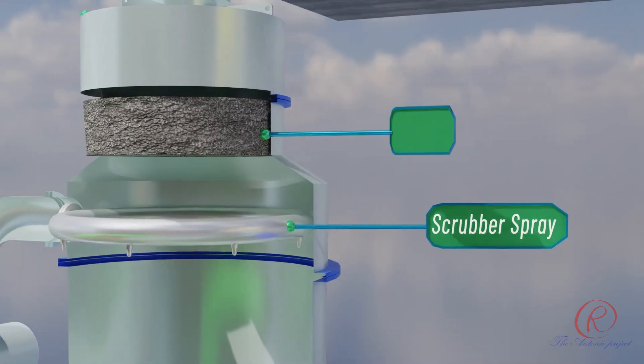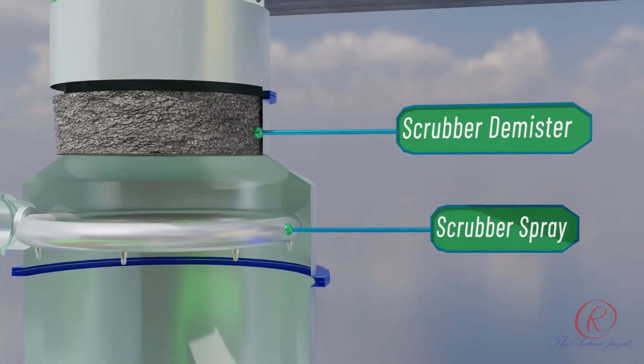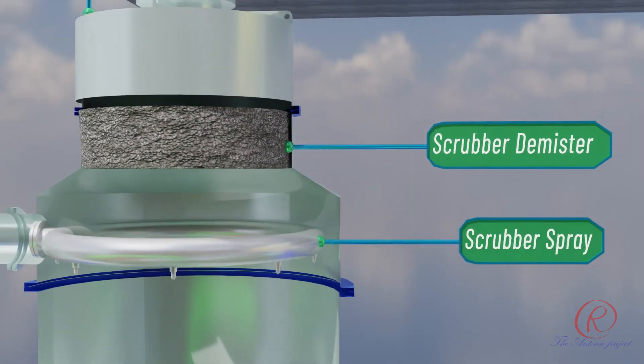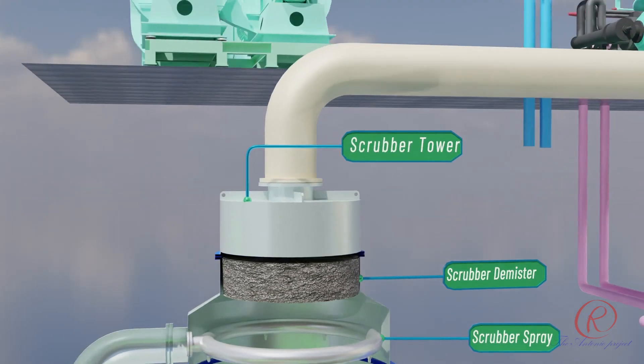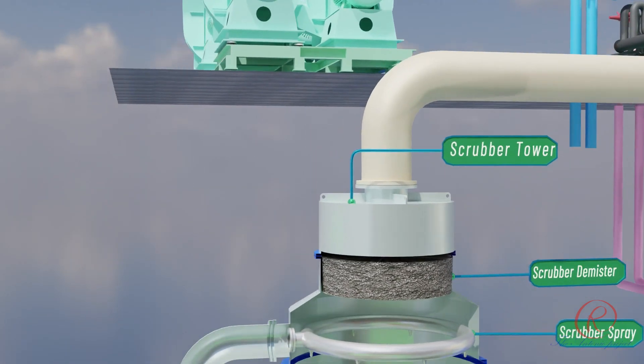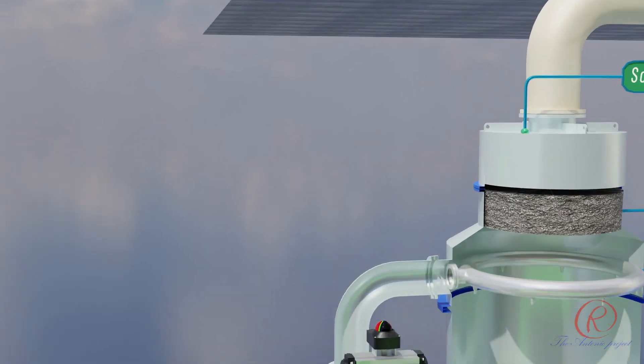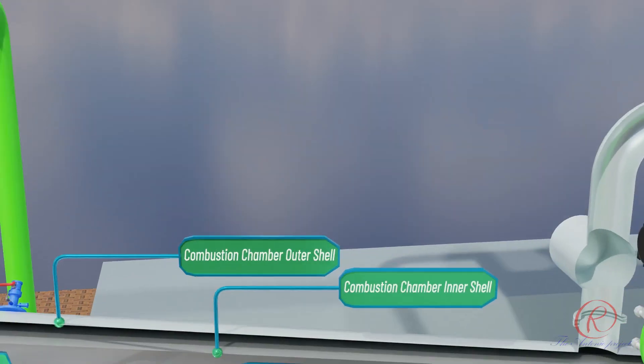Scrubber demister: to remove entrained liquid droplets or mist from the gas stream exiting the combustion chamber. Scrubber: to remove entrained liquid water spray from the air. Scrubber tower: the unit for capturing, cooling, and removing pollutants, dust, or particulate matter from the flue gas.